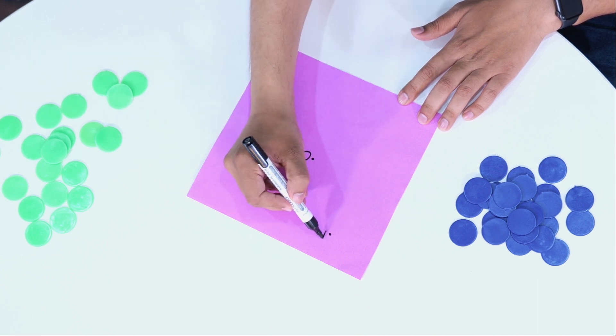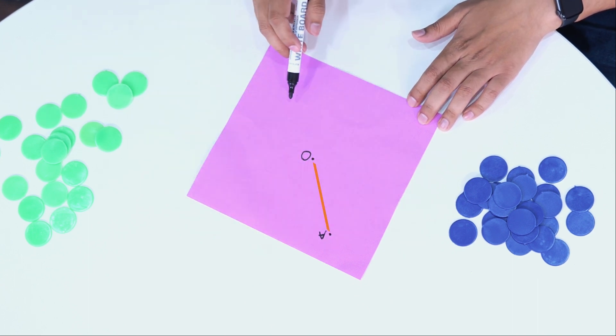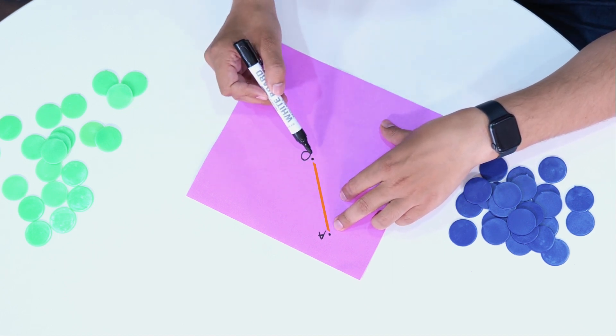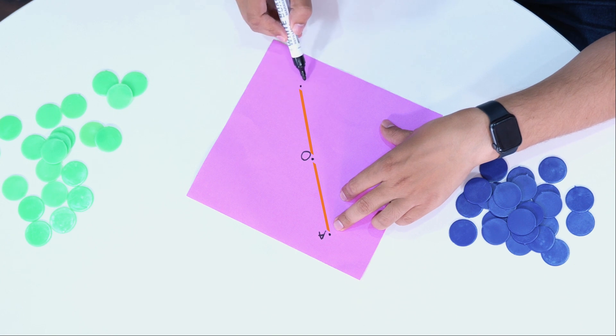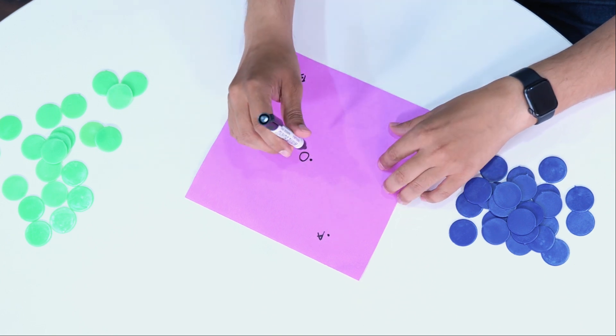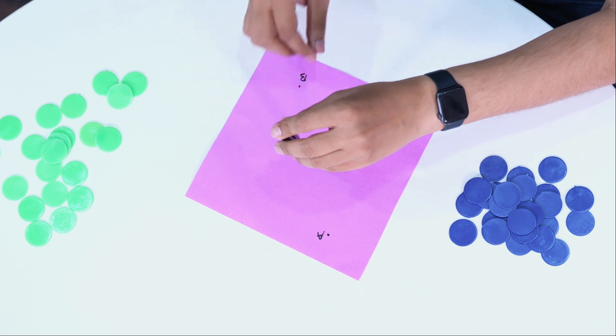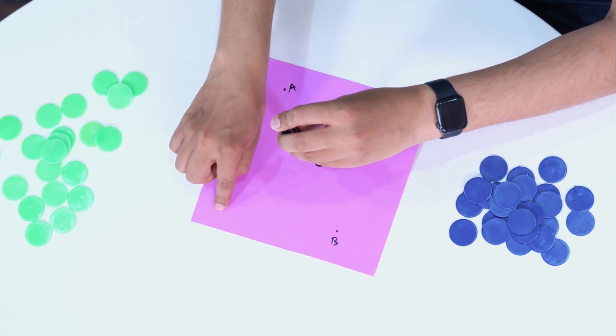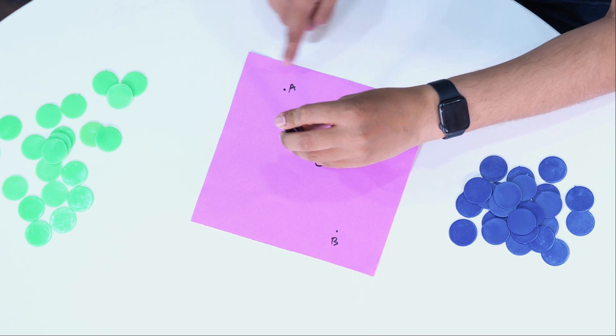And now take the point that's exactly the opposite of A with respect to O, so we have this point B here. Now what will happen if, with respect to the center O, I rotate this square to interchange the two points like this? What happens? Well, the square comes back to exactly the same position.